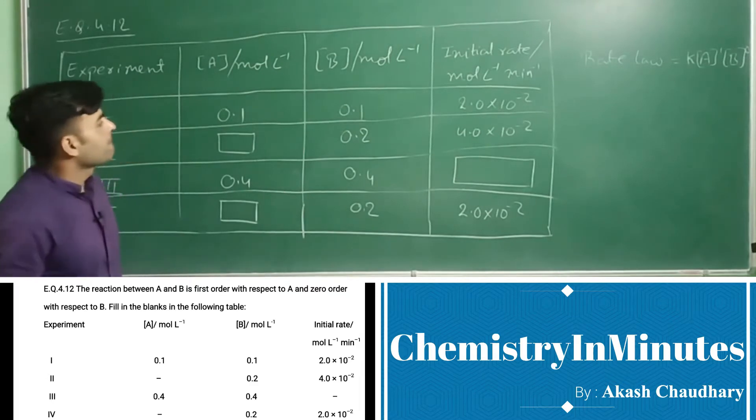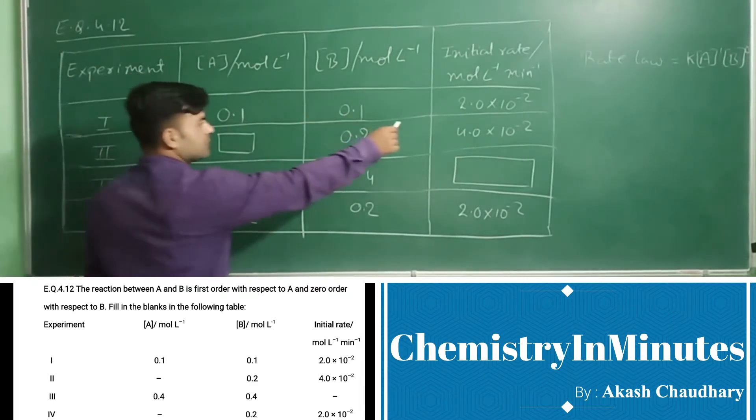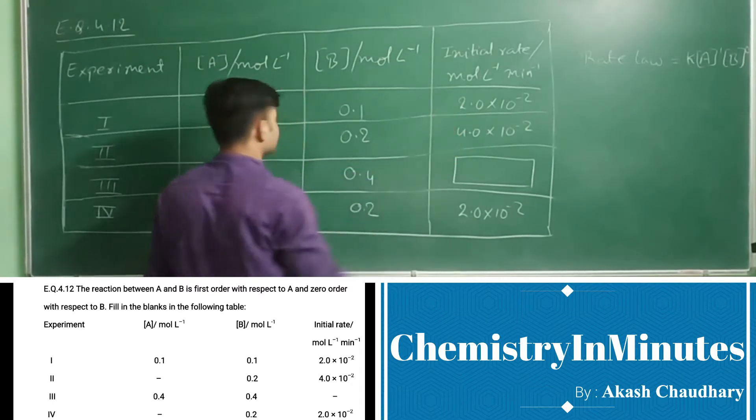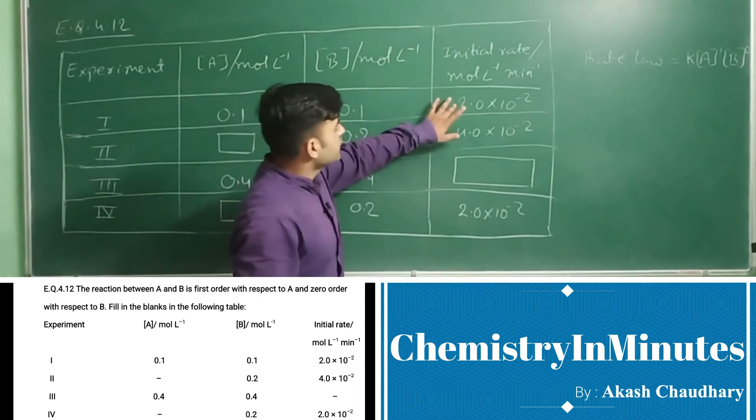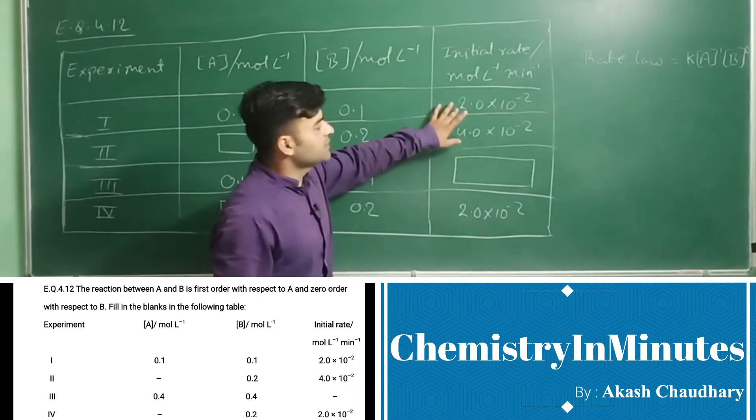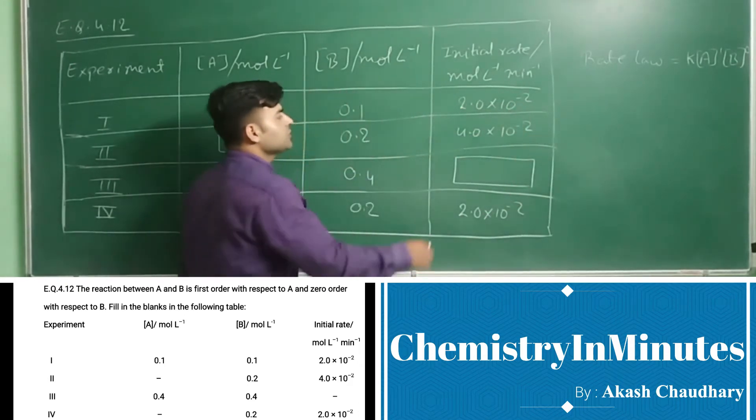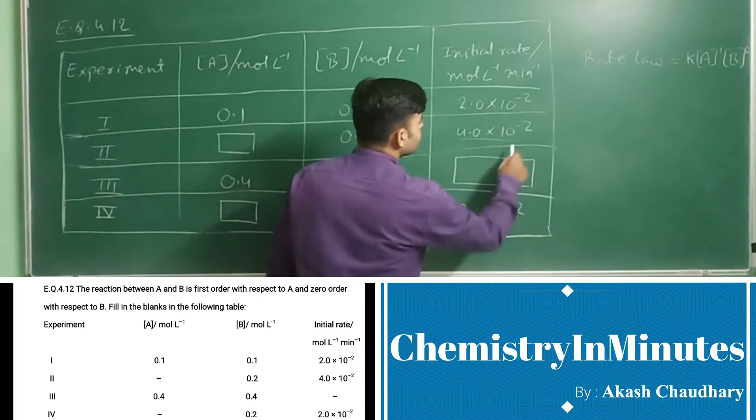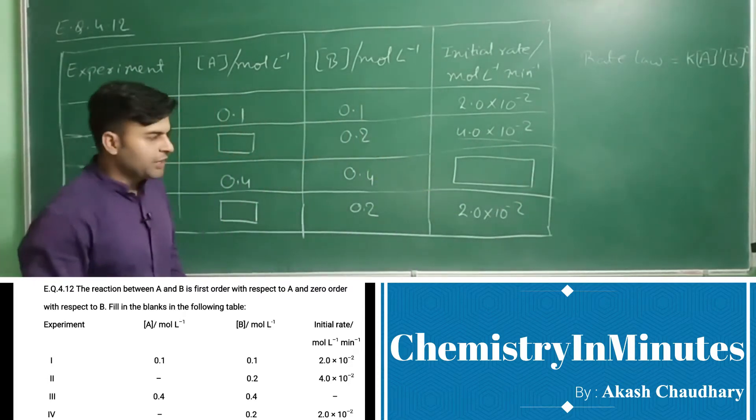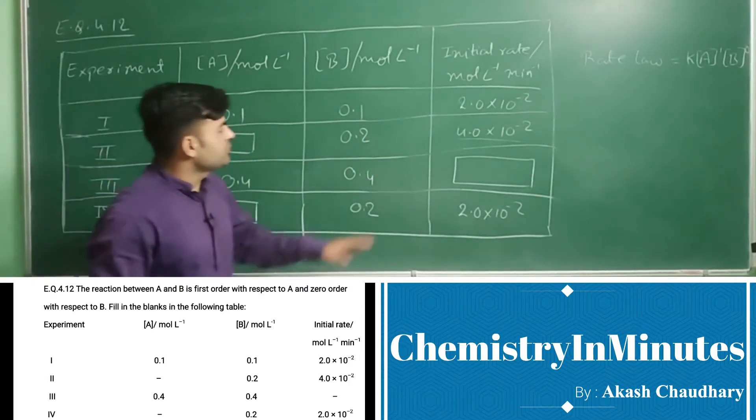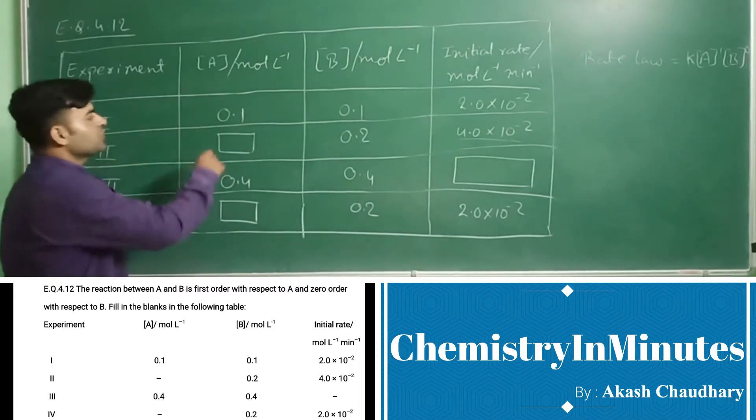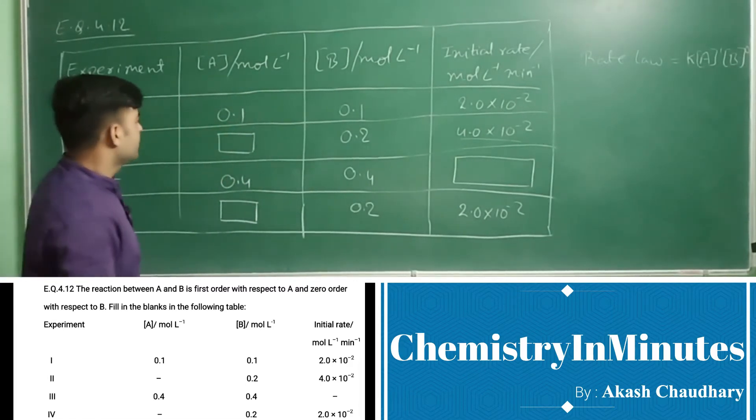Now in this case, first and second, the rate of reaction has become double as it is changed from 2.0 × 10^-2 mole per liter to 4.0 × 10^-2. Now it has become double, that means the concentration of A has also become double.